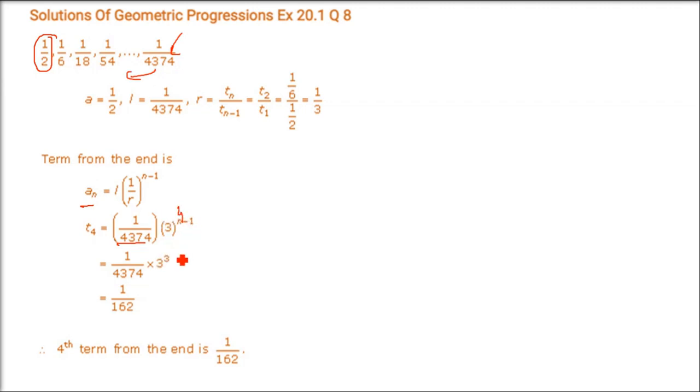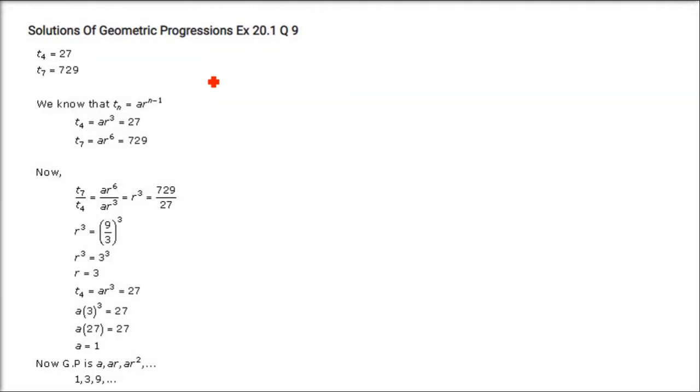So 1/r = 3. For the 4th term from the end: 3^(4−1) = 3^3 = 27. Combining with the last term l, we get 1/162.